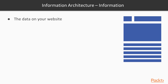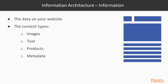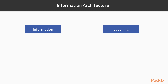Then we also have information. When we think about the building blocks for our websites — the content types — you have images, you have text, different products on display, metadata. All of those things are the information. What we're trying to do is look at how we can combine and group our information in a logical way. When we combine the data and content and clearly label it, we're able to create an effective site.